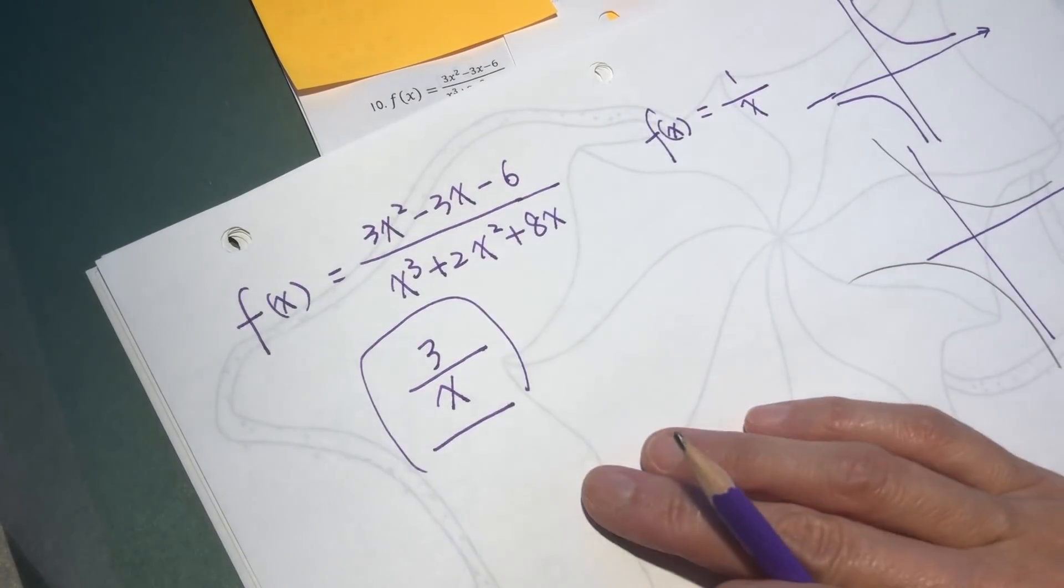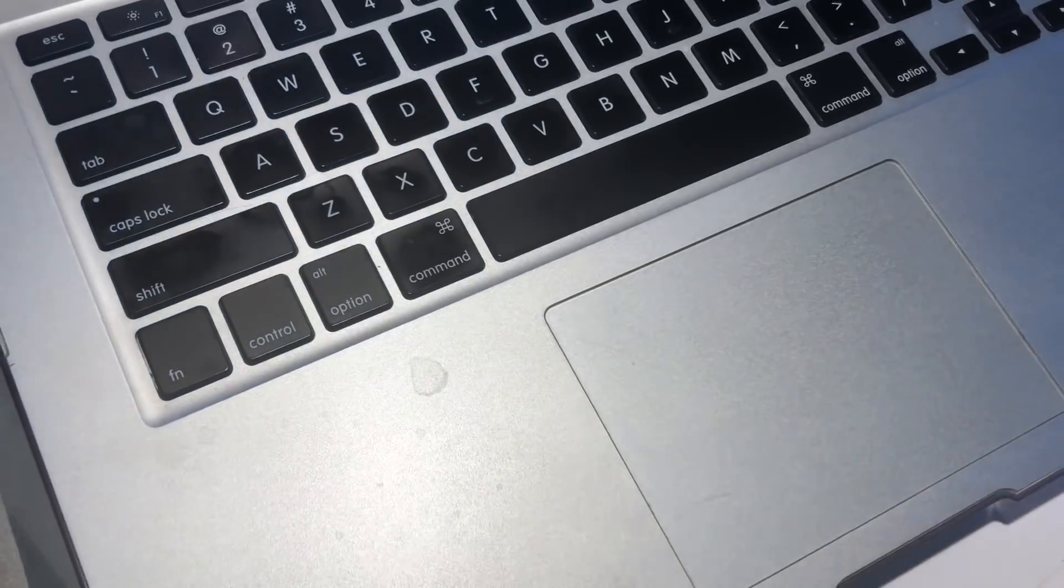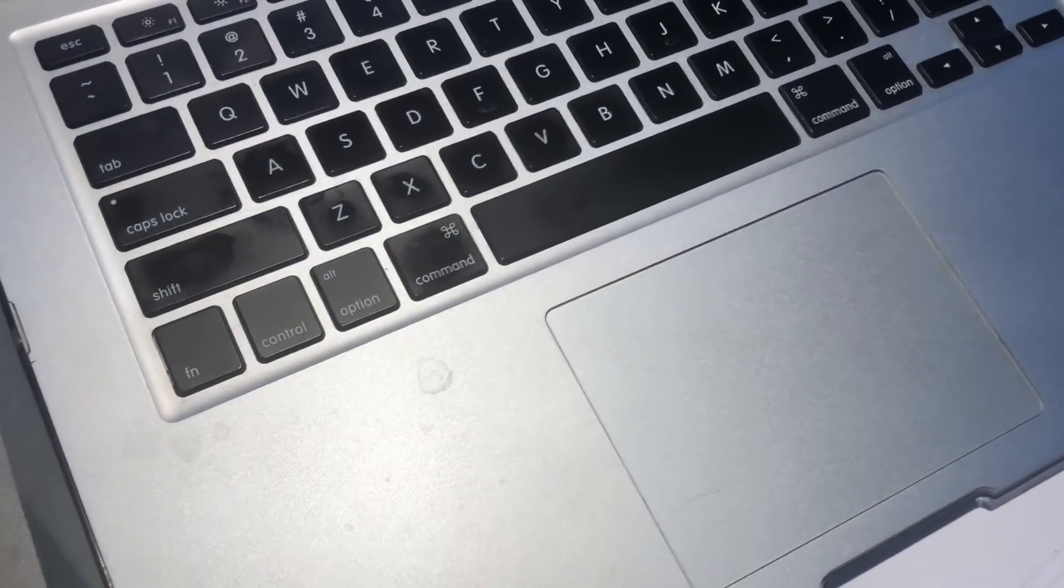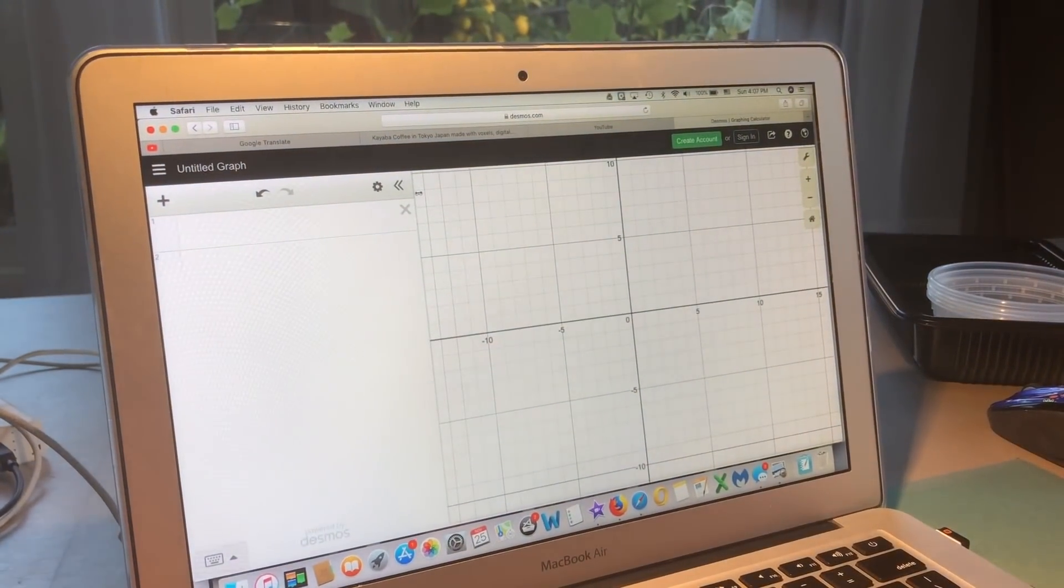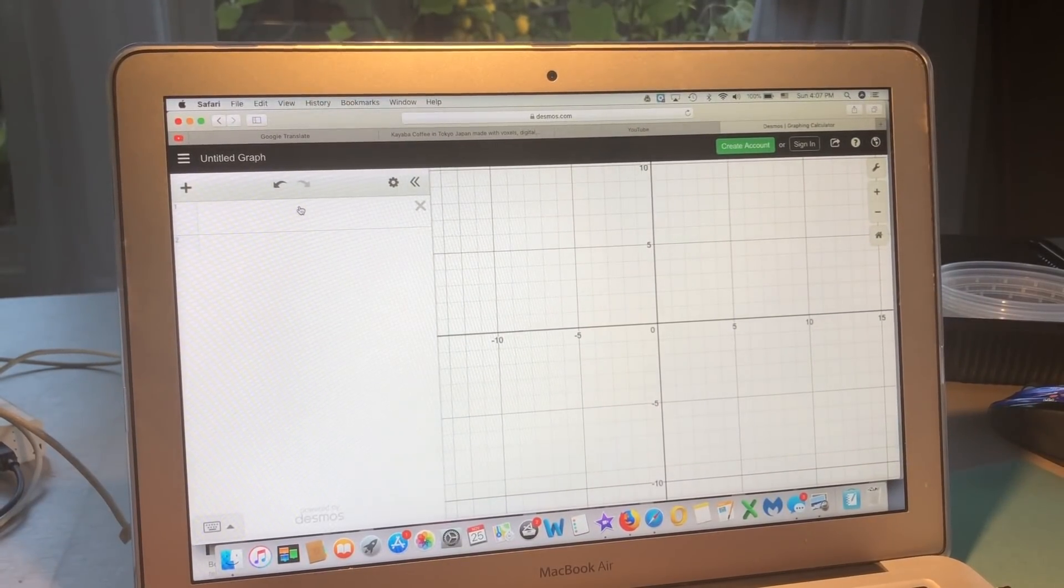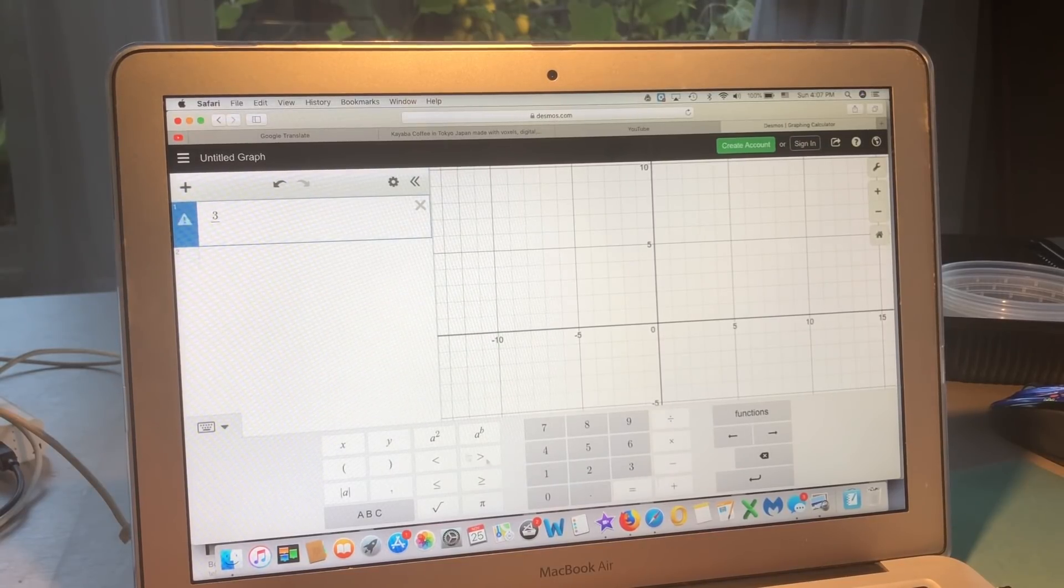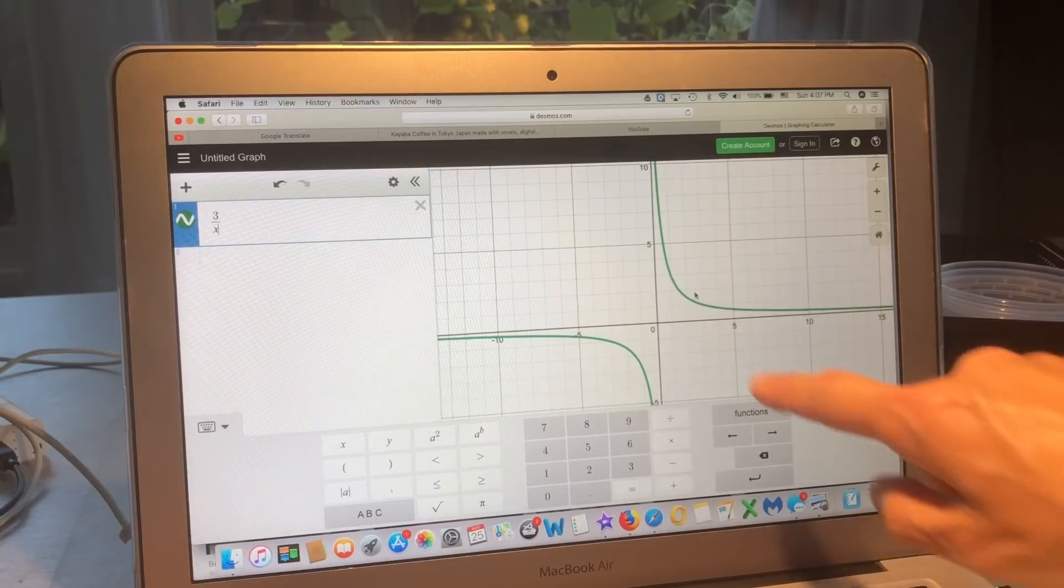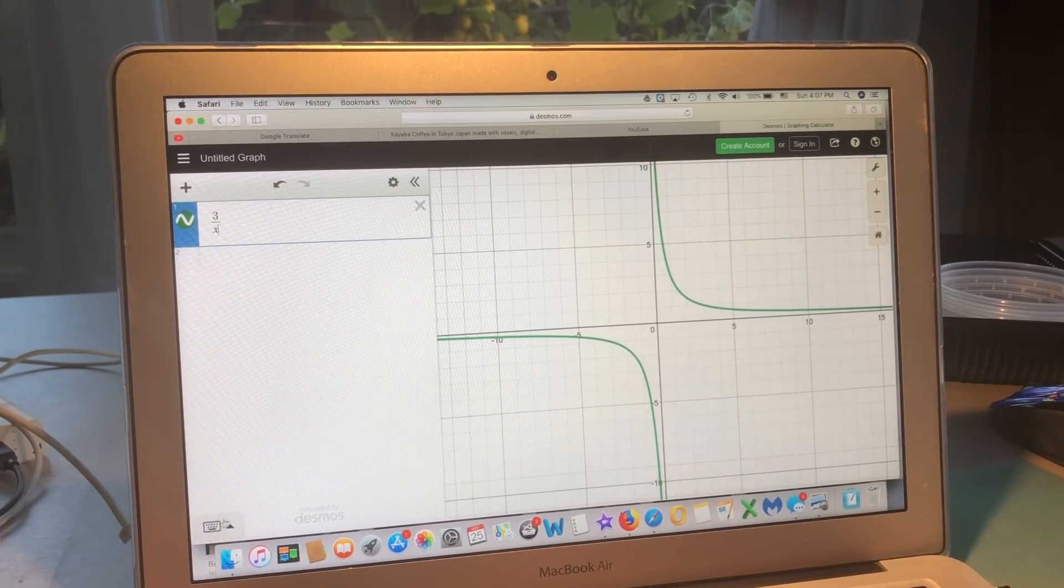But when I see the graph on Desmos, let's come to Desmos. I see something totally not making any sense. What is wrong with my life? So here we are on Desmos. Let's see, 3 over x, and this is the graph, right?